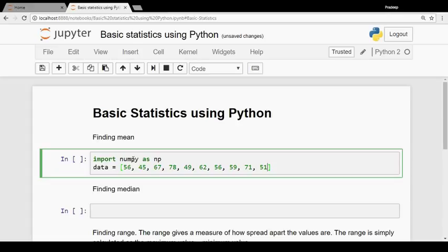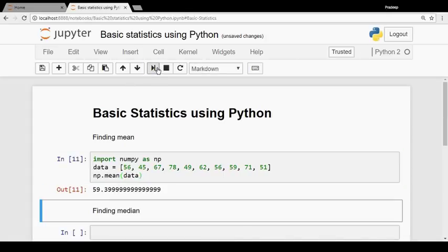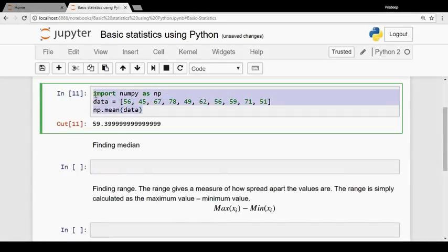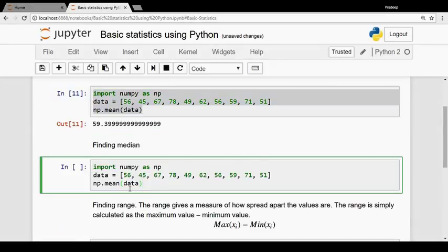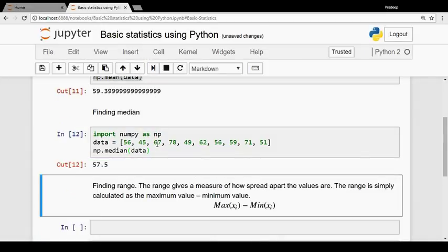The first thing is finding the mean, the center of the data. Let's find the mean here. We get around 59.4. Now let's find the median for the same set of data. We get 57.5. These are what we can use to find the center of the data.